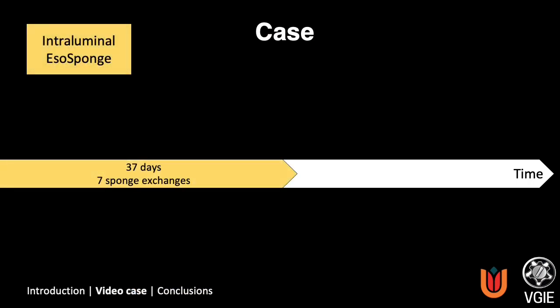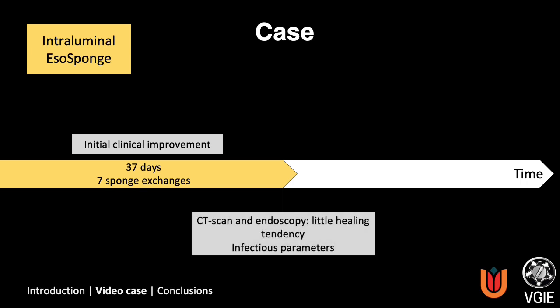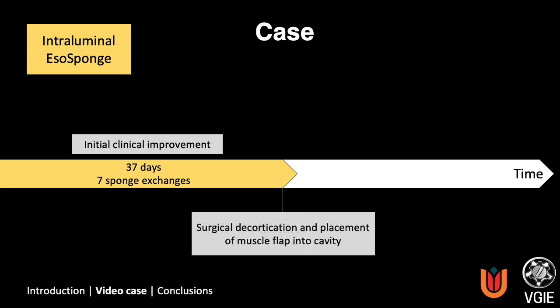During this treatment, the intraluminal sponge was exchanged every 3 to 7 days. After clinical improvement with 7 sponge exchanges in 37 days, little healing tendency of the defect and cavity was observed during CT imaging and endoscopy, and infectious parameters remained high. Therefore, it was decided to perform surgical decortication and placement of a muscle flap into the cavity.